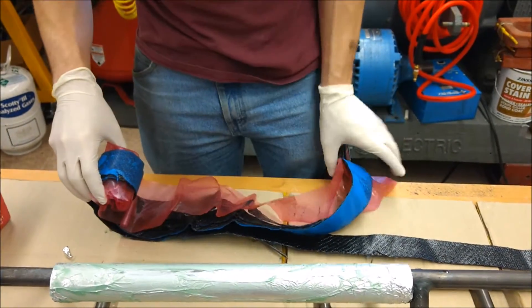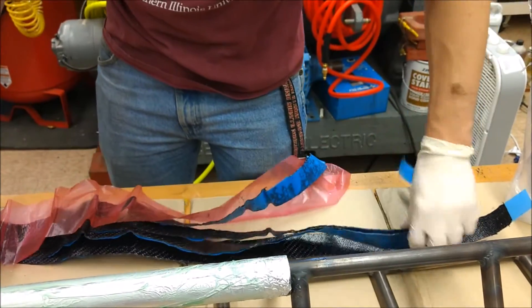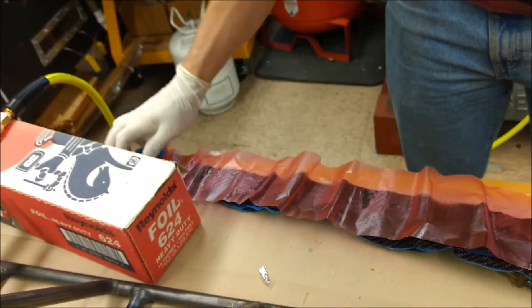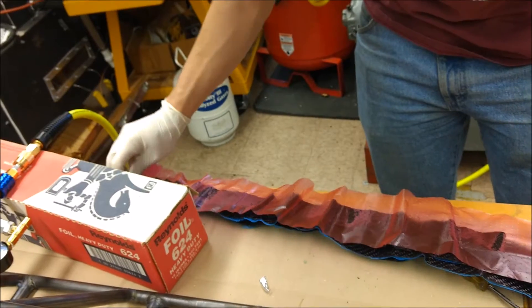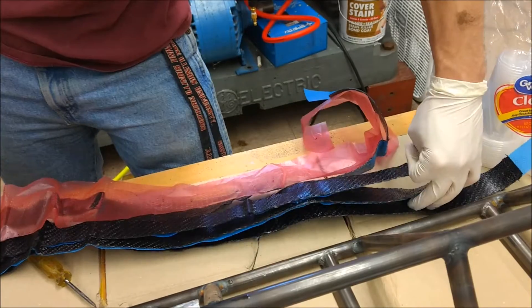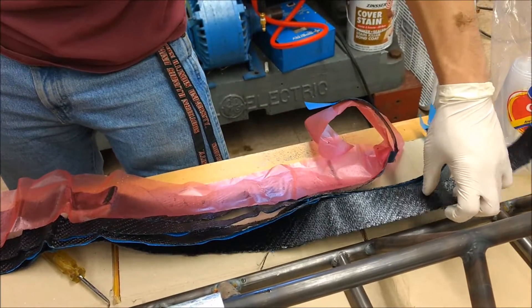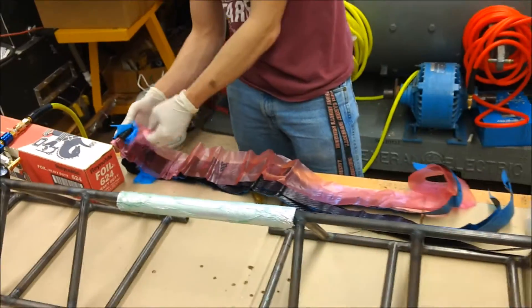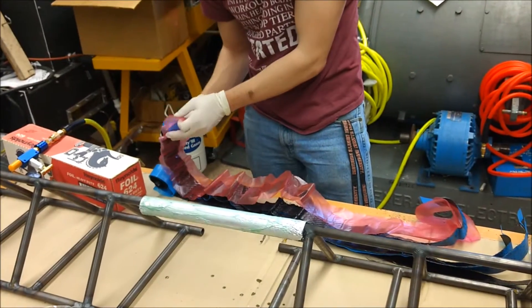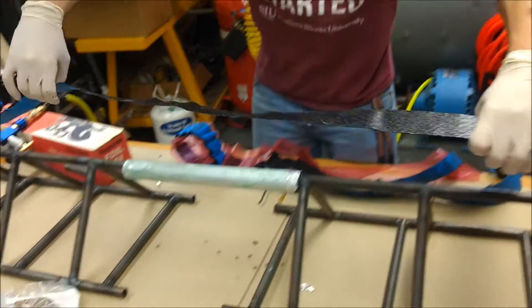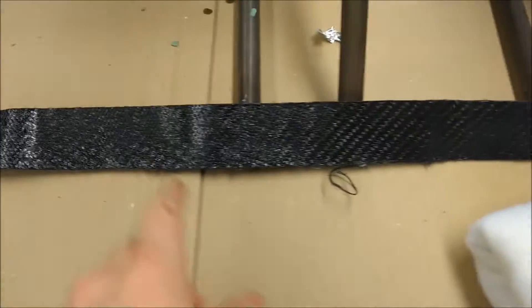Pulled our carbon fiber out of the freezer like a normal human being. This is actually carbon nanotube reinforced carbon fiber. It's prepreg, so keep it frozen so the resin doesn't set. I'm going to wait for this to heat up and get tacky so I can put it on.